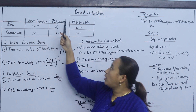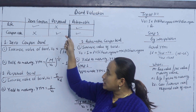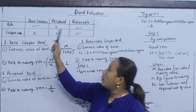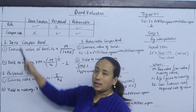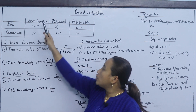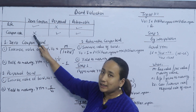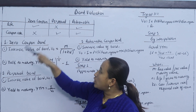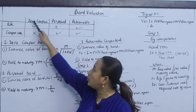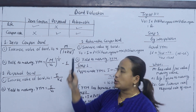The three types are: zero coupon bond, perpetual bond, and redeemable bond. We will solve problems using the formula for each type of coupon rate. Now we take the first one — coupon is not zero. The second is a zero coupon bond.